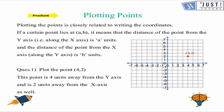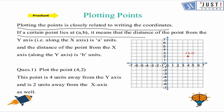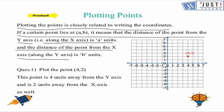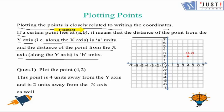Plotting points is closely related to writing the coordinates. If a certain point lies at (a, b), it means that the distance of the point from the y-axis, that is along the x-axis, is a units. The distance of the point from the x-axis, that is along the y-axis, is b units. So in simple words, a is the x value and b is the y value.